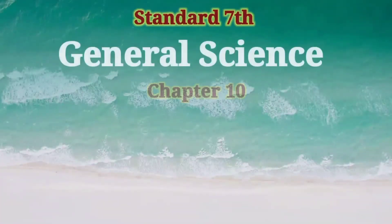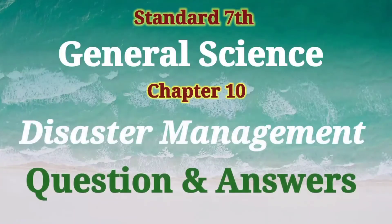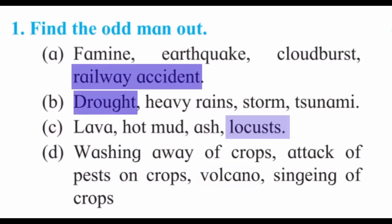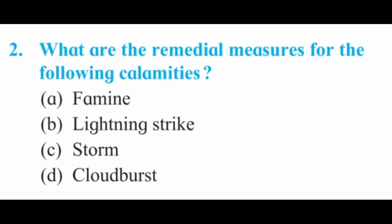Hello students, today we will see question and answer for Standard 7 Science, Chapter number 10: Disaster Management. Question number one is 'Find the odd man out' — here are the questions with the answers. Now, question number two: what are the remedial measures for the following calamities?